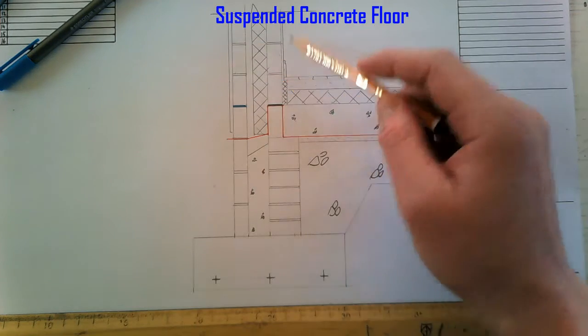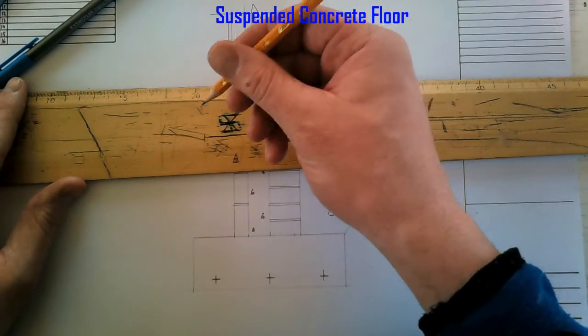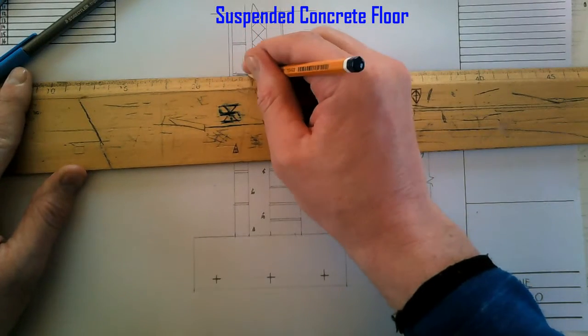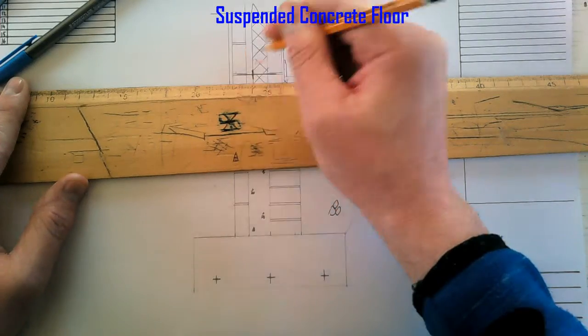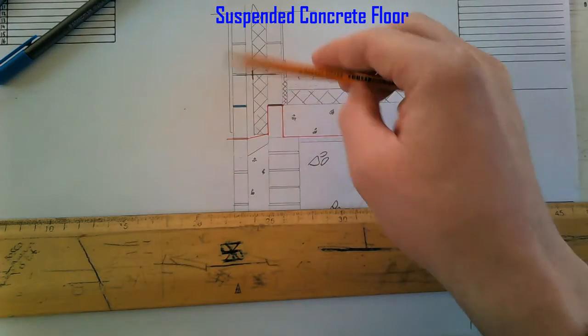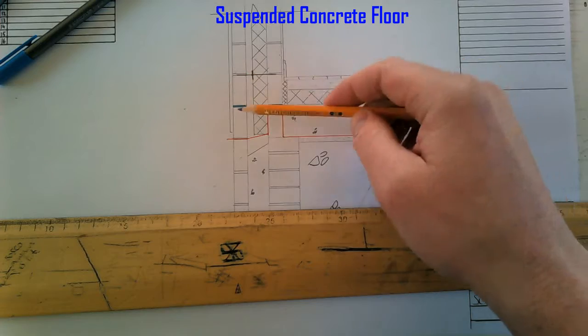100mm insulation on the wall. We forgot our wall ties, holding the insulation in. And then we have our external render and our DPC.